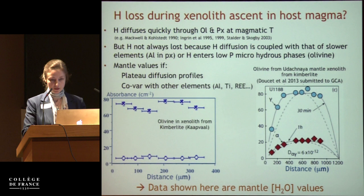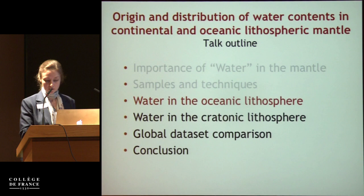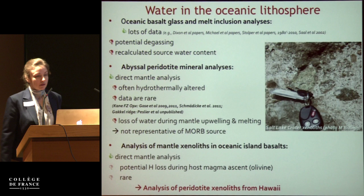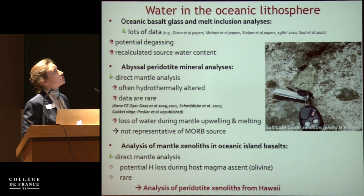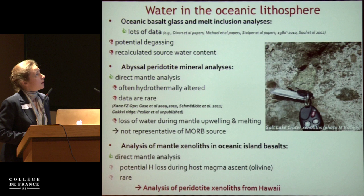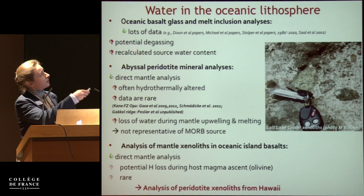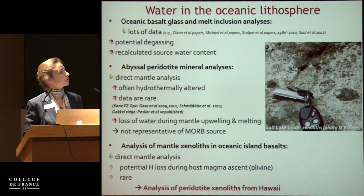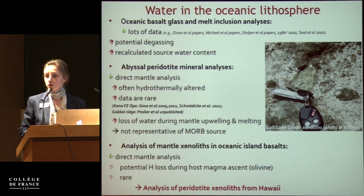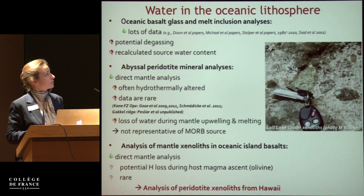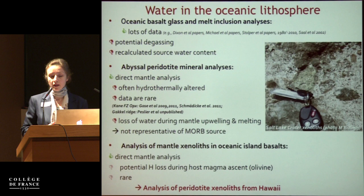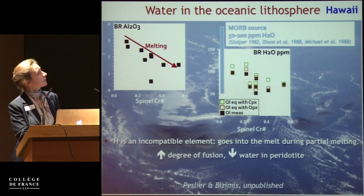Let's start with the oceanic mantle. For mantle rocks in the oceanic lithosphere we have lots of data from analyzing water in oceanic basalts, but calculating the water content of mantle sources requires correcting for potential degassing. We also have real mantle rocks from oceanic settings: abyssal peridotites, which are outcrops at mid-ocean ridges — great, but very often altered by hydrothermal fluids. And finally, mantle xenoliths in oceanic island basalts — here I'll focus on those from Hawaii.